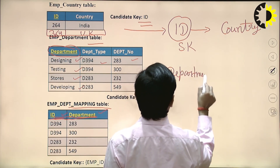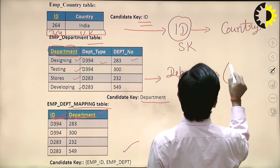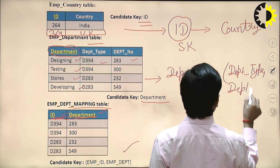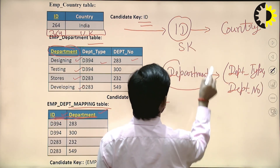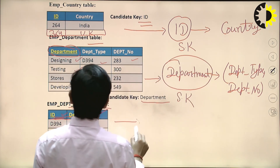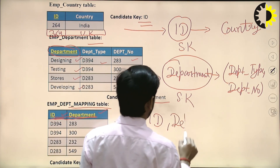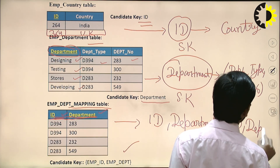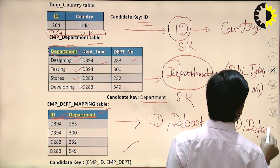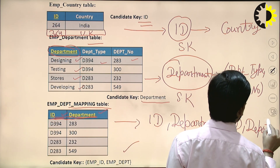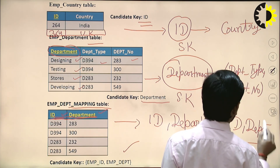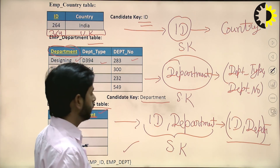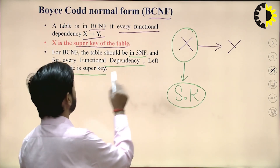From department we can identify department type and department number — department is also a super key. In the mapping table, from ID and department we can identify ID and department — this is a trivial functional dependency, and ID and department together is also a super key. All three tables satisfy the condition that the left-hand side must be a super key.